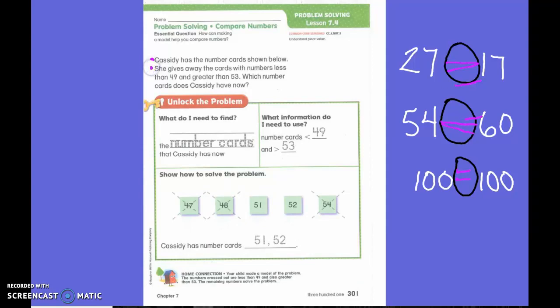She gives away the cards with numbers less than 49 and greater than 53. Which number cards does Cassidy have now? So what are we trying to find?